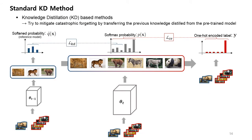And knowledge distillation method is the second component. It tries to mitigate forgetting by transferring the previous knowledge distilled from the pre-trained model. It learns previous knowledge by trying to make the softened probabilities of the new task to be the same as those of the pre-trained model.